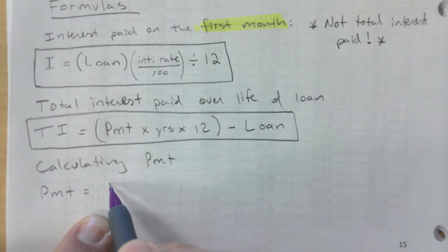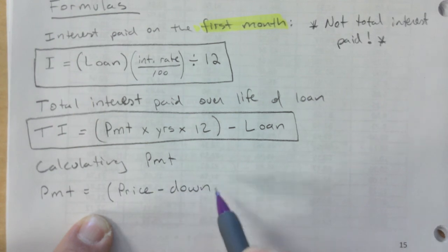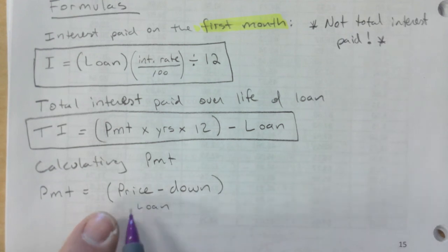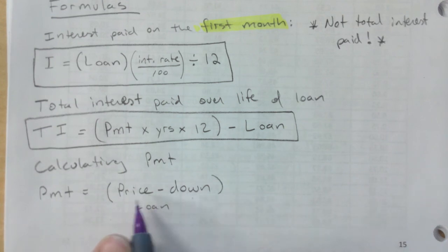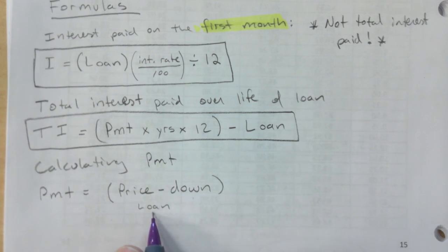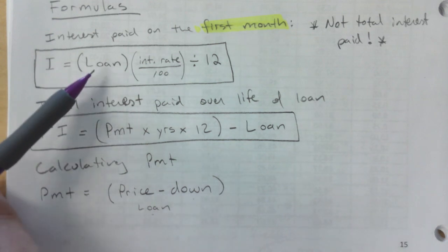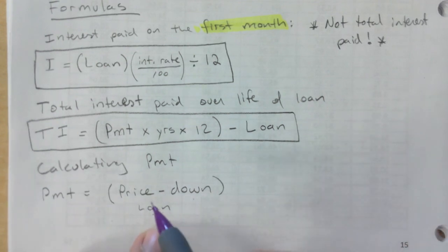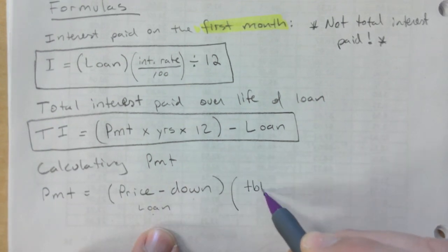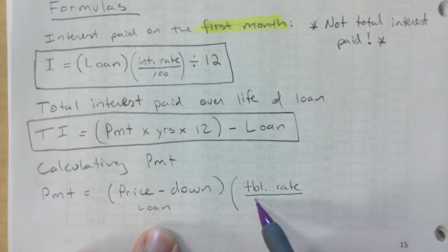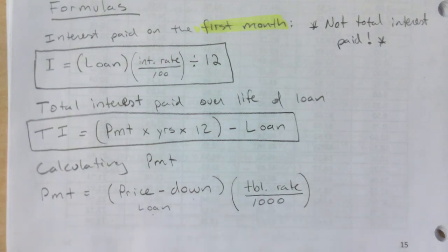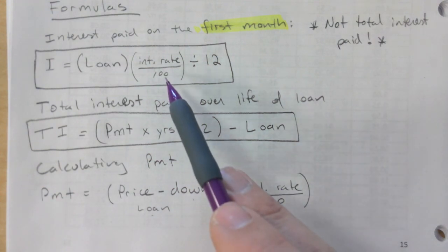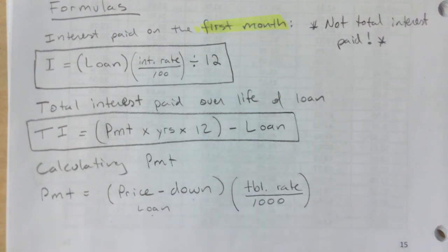Payment equals (price minus down payment) times the table rate, divided by 1,000. Price minus down payment gives you the loan amount. Then multiply by the table rate and divide by 1,000 — not by 100. Students sometimes mix these up: dividing by 100 versus 1,000 makes a big difference and your answer won't make sense. These three formulas — first-month interest, total interest, and monthly payment — cover about 60–70% of what we do in vehicle financing.